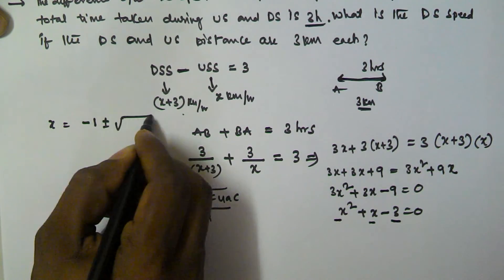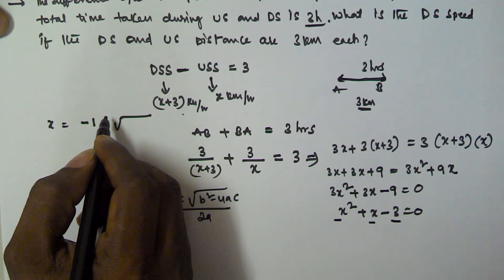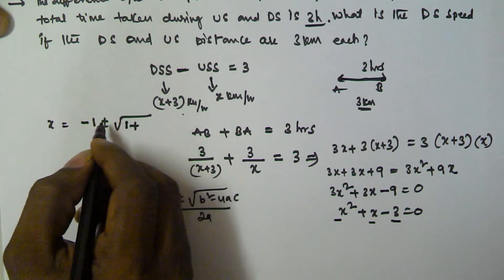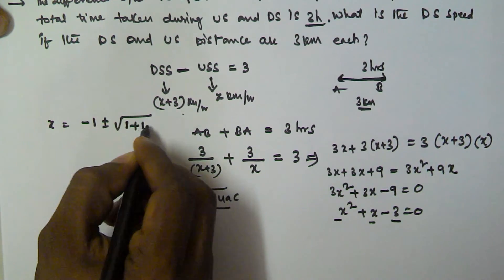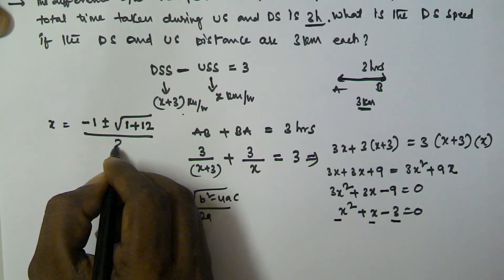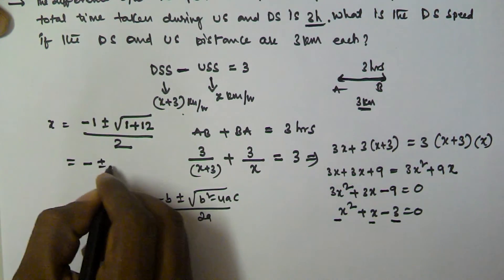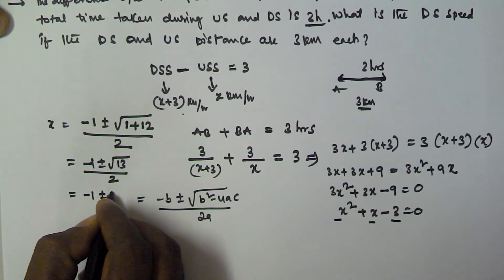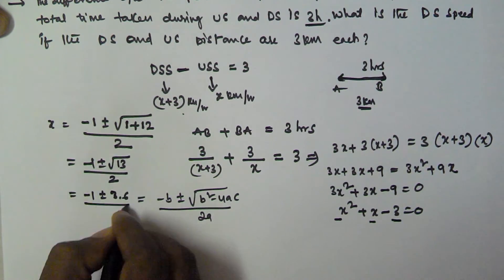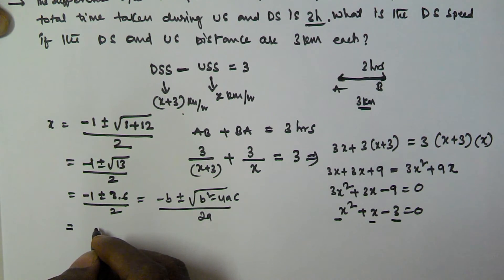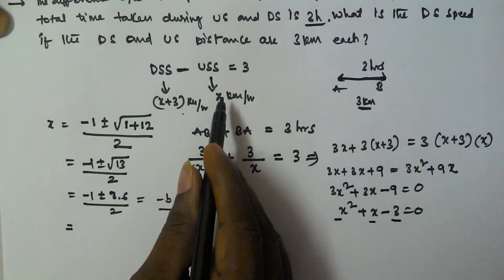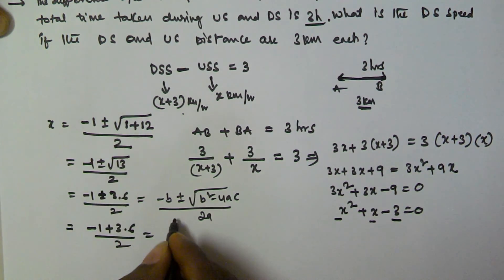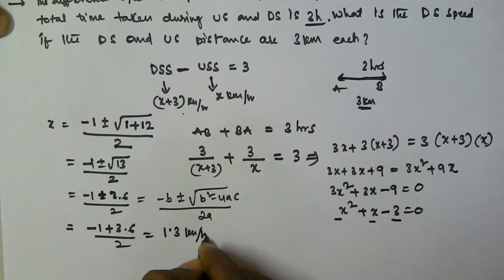x equals minus b, which is minus 1, plus or minus the square root of (b² minus 4ac). b² is 1, and 4ac is 4 times 1 times minus 3, which is minus 12. So b² minus 4ac equals 1 plus 12 equals 13. Therefore x equals minus 1 plus or minus the square root of 13, divided by 2. The square root of 13 is approximately 3.6, so x equals minus 1 plus or minus 3.6, divided by 2.